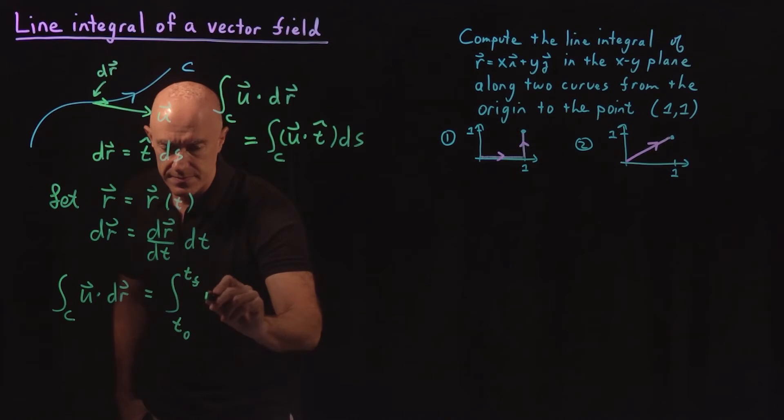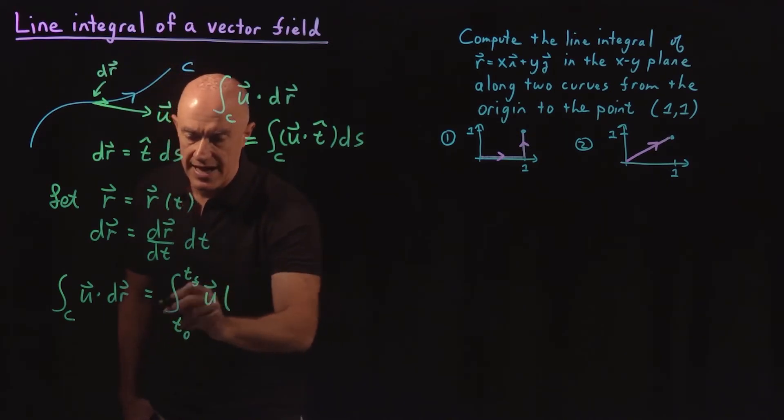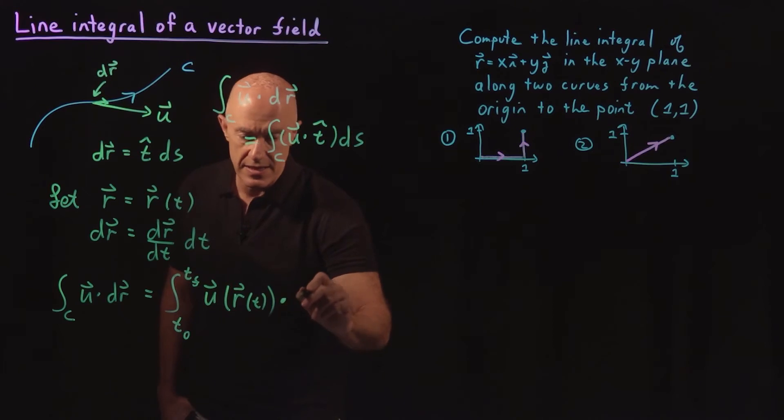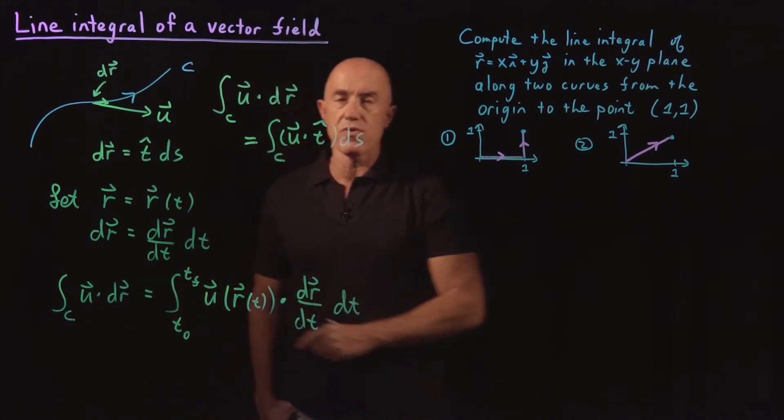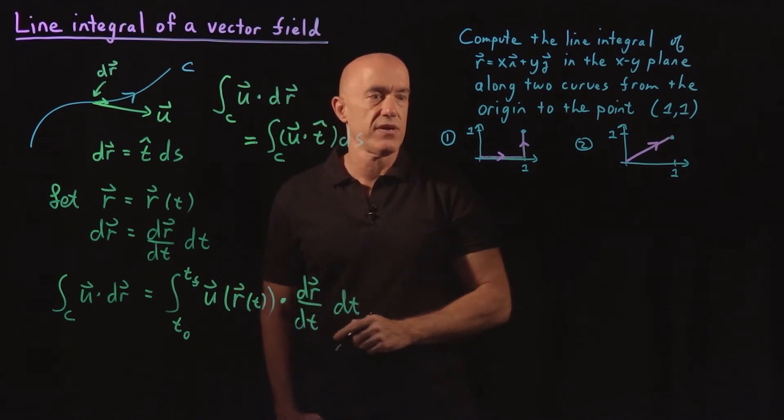Of U, now evaluated at R, which is evaluated at t, dotted into dR/dt, and then integrated dt. That's how we would usually compute the line integral of a vector field.